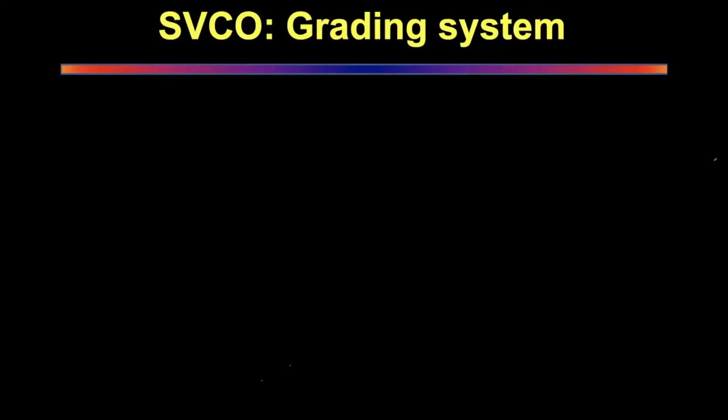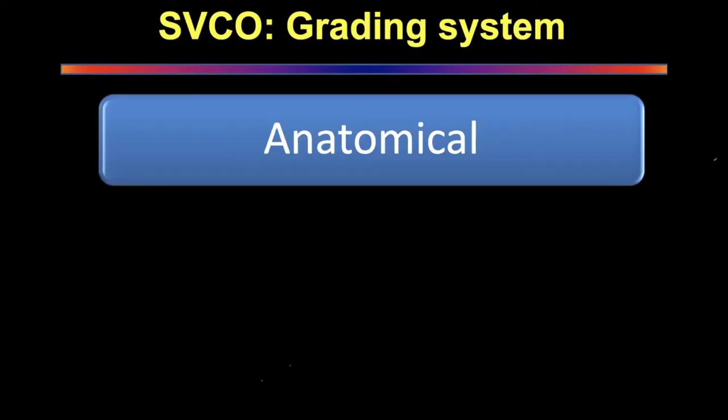There are many grading systems available. You can grade SVC obstruction clinically — depending on presence or absence of symptoms — or radiologically — depending on the amount of compression and whether it is above, at, or below the azygous. When a report says 'grade 2 SVC obstruction' you need to know the grading system being used. There are anatomical, clinical, and radiological grading systems.